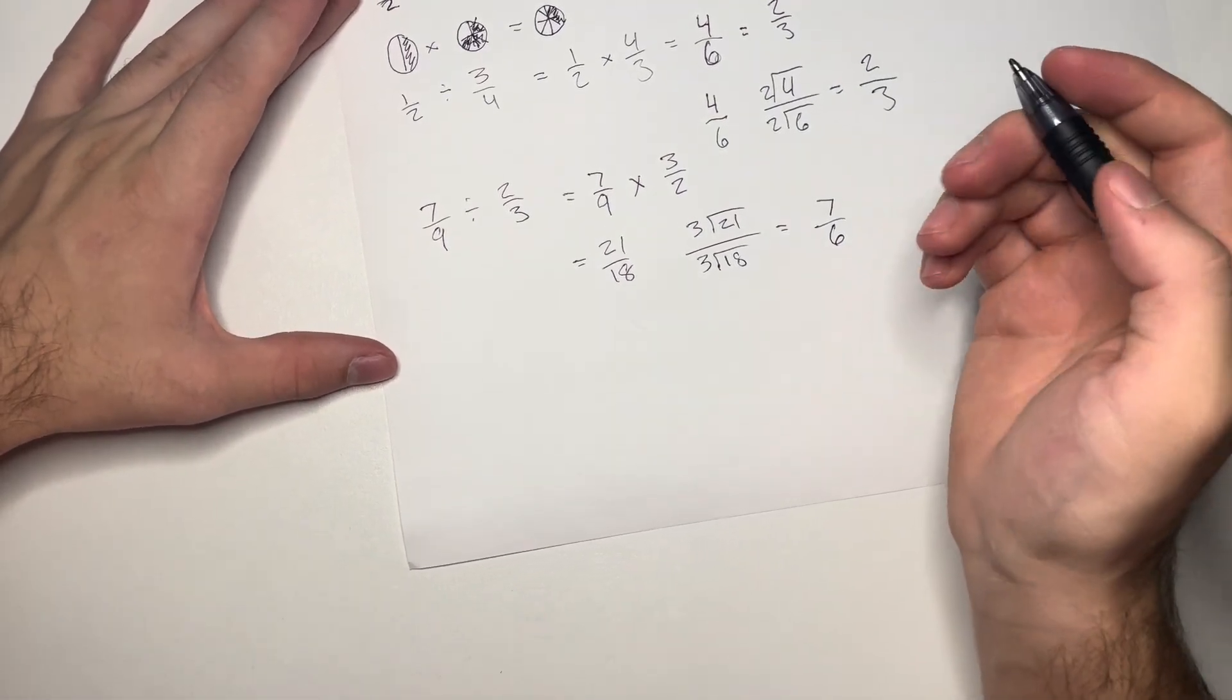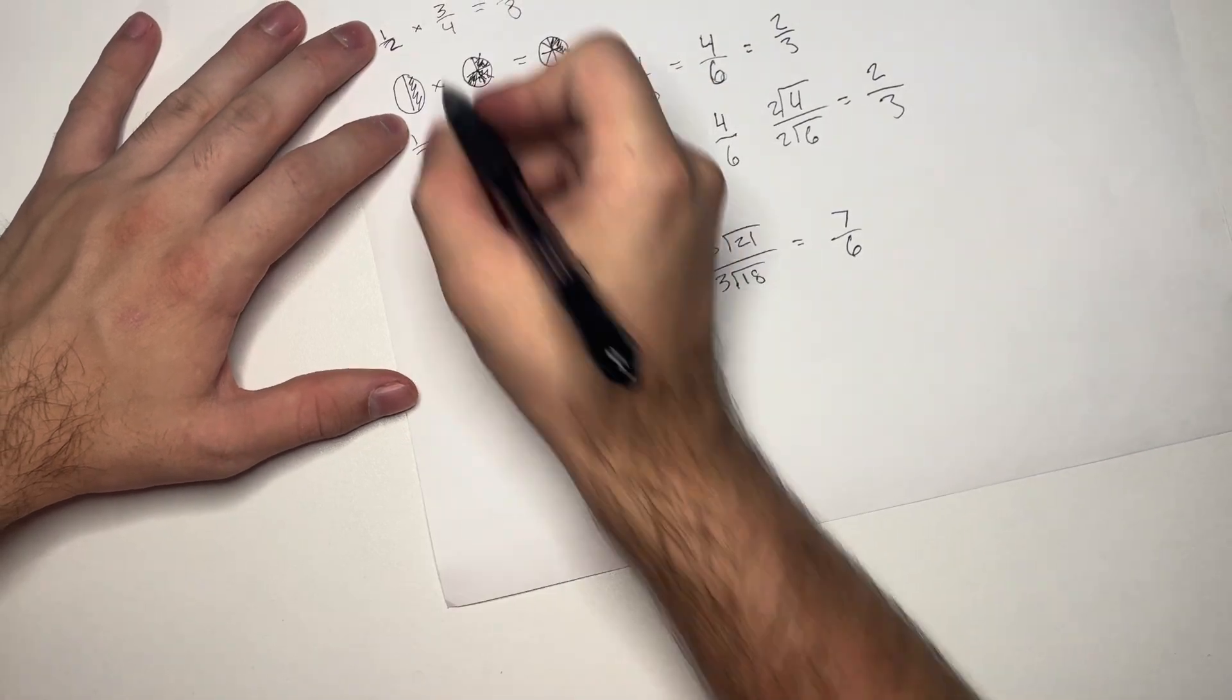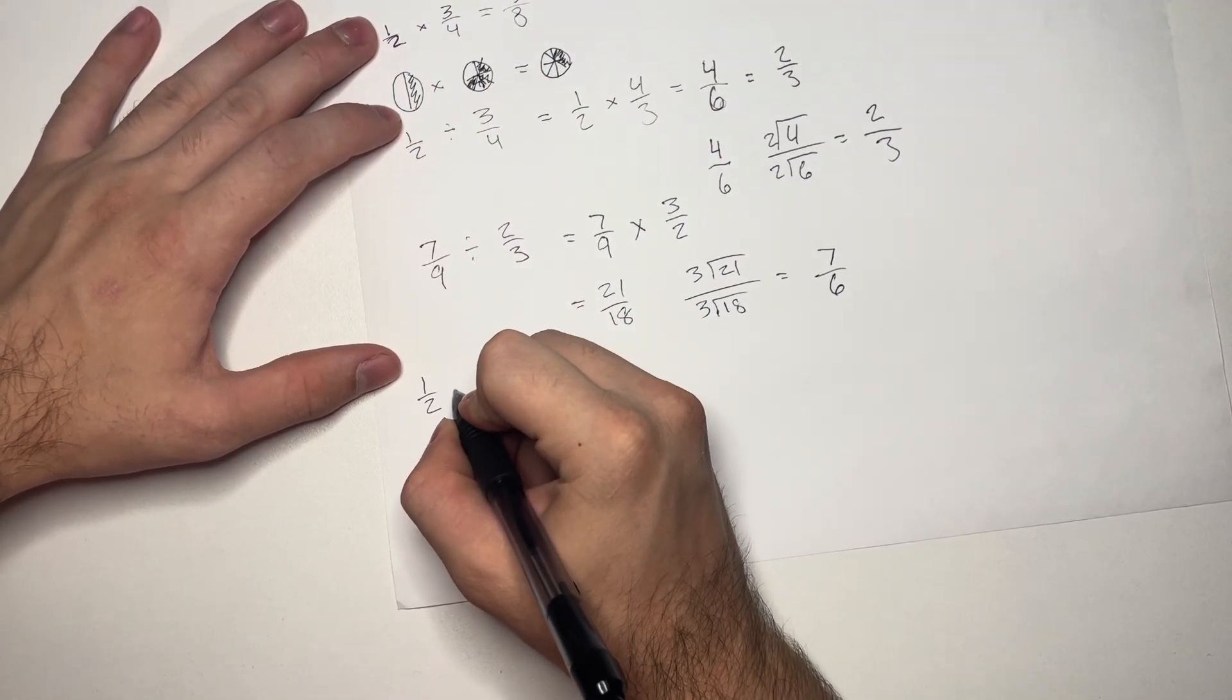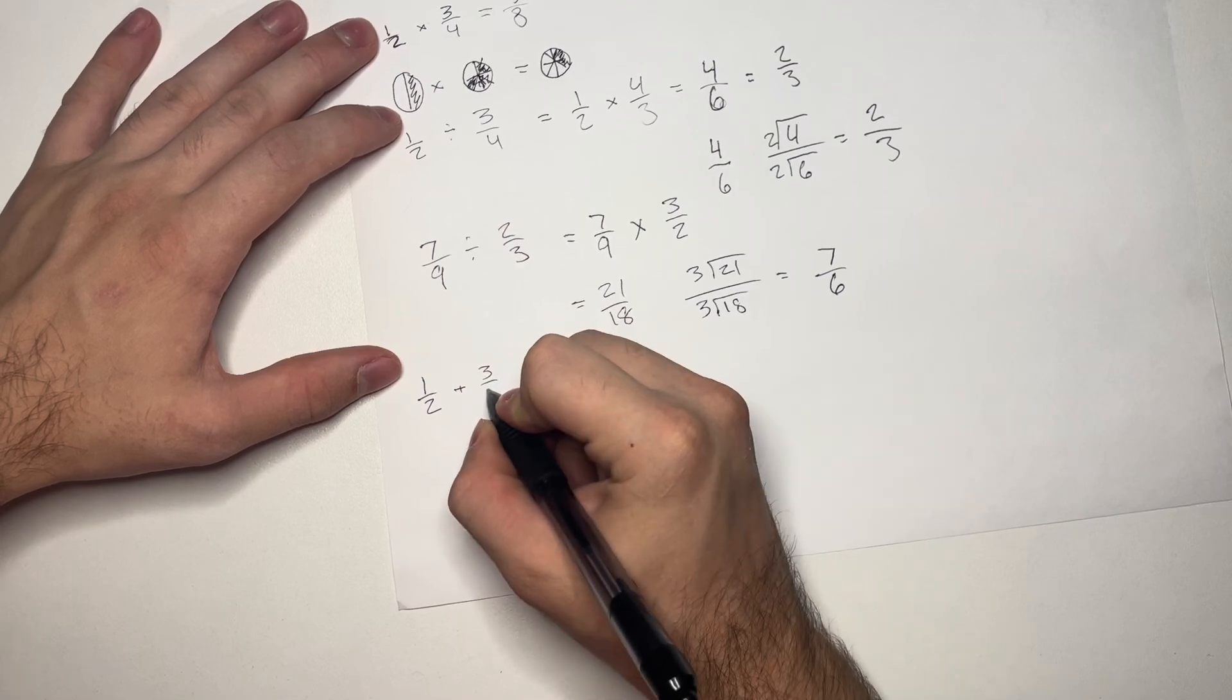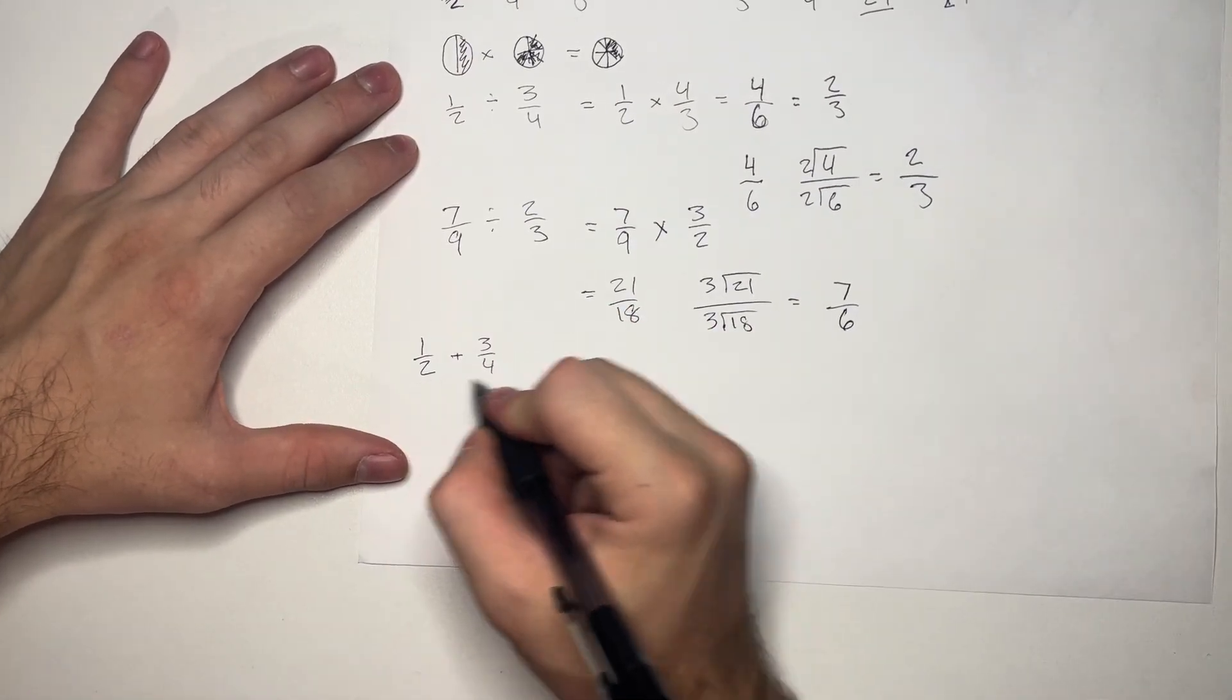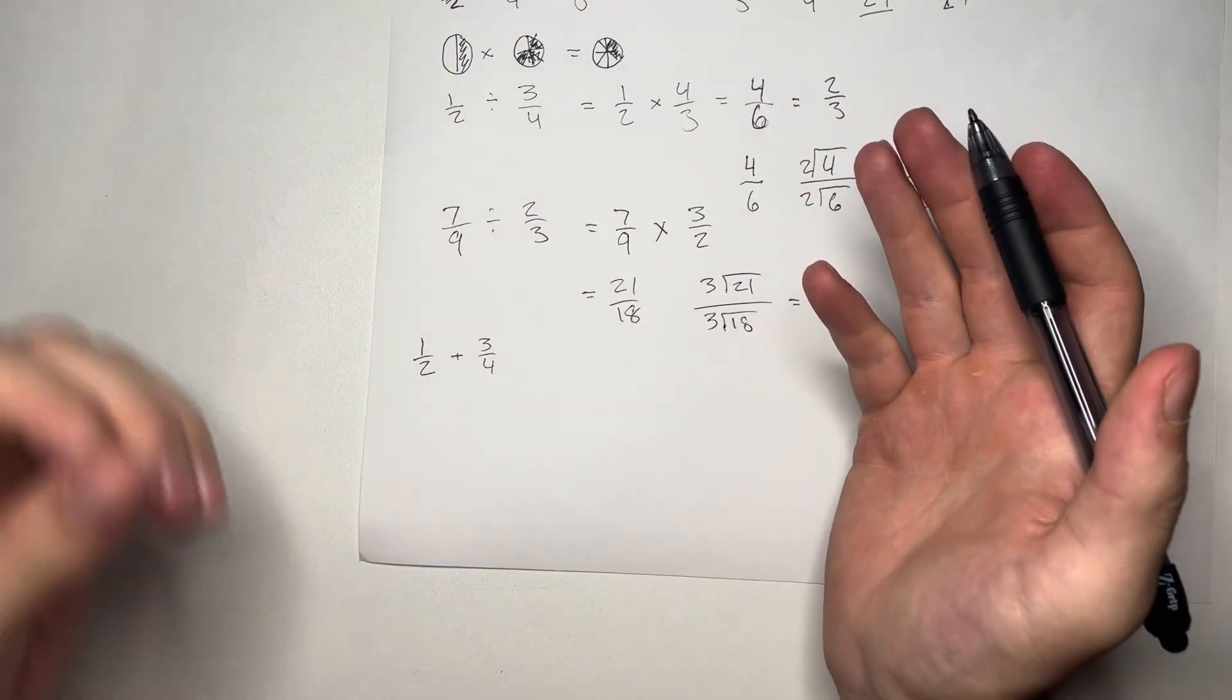Now, let's go ahead and talk about addition and subtraction. We're going to take our same numbers that we have been using. 1 over 2 plus 3 over 4. So, here, we need to find common denominators because we don't know how to add this without having a common denominator.